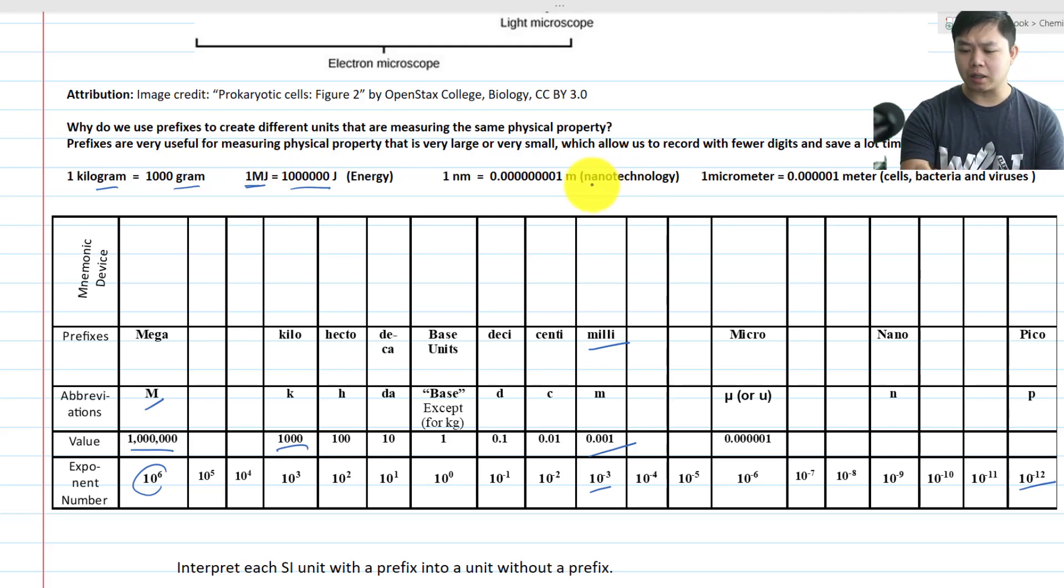Now what about nanotechnology? Working with nanotechnology, that's 10 to the negative 9th. If you write this in terms of meter, that would take forever, and the chance of making mistakes is very likely. Where if we just write 1 nanometer, super easy isn't it?